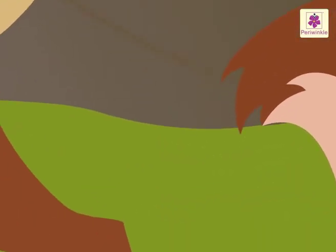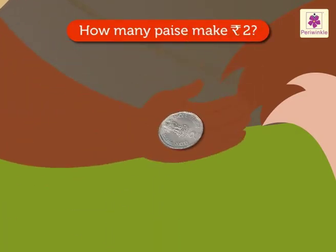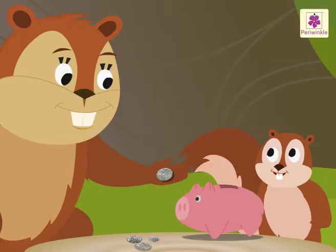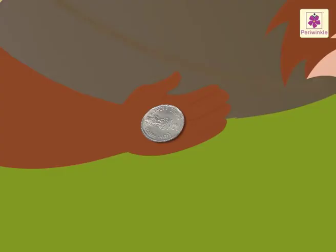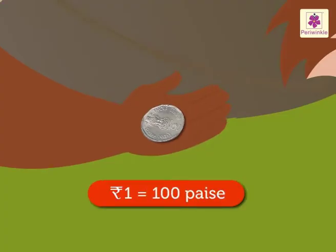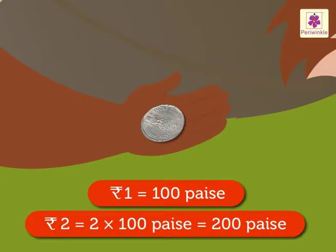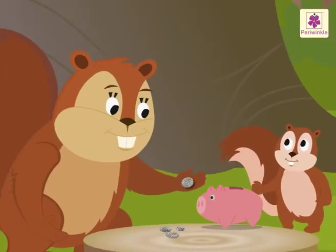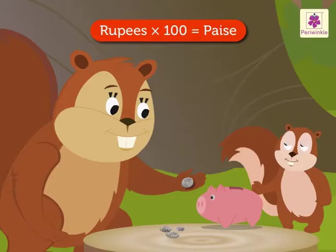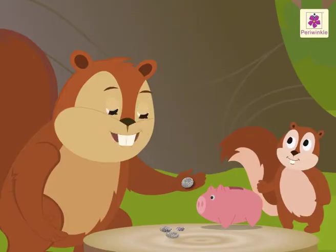Now, can you tell me how many paise make two rupees? I don't know, please explain me. Look, this is a two rupee coin. We know that one rupee is equal to one hundred paise. So, two rupees is equal to two into one hundred, which is equal to two hundred paise. Now I know — we multiply rupees by hundred to get paise.